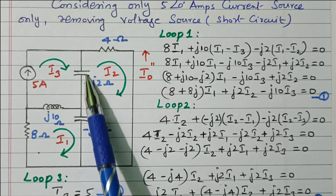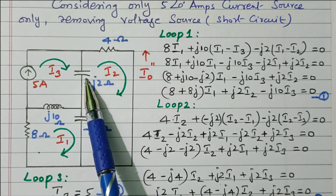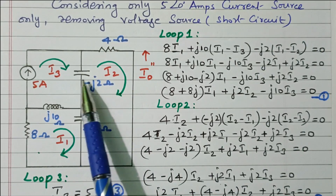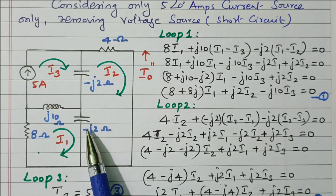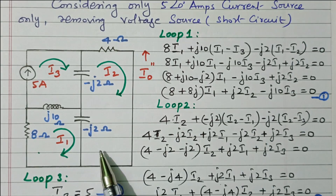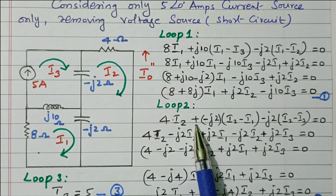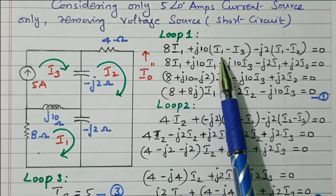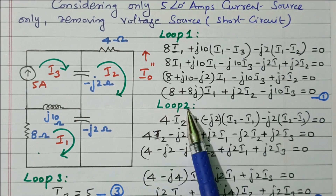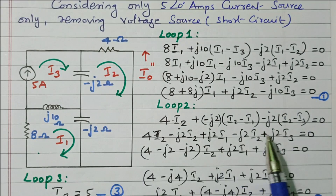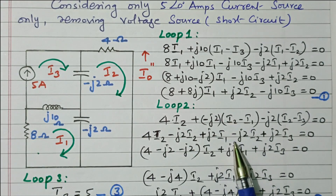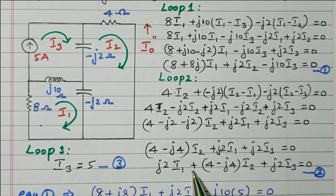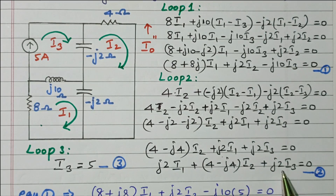Applying KVL to loop 2: the 4 ohm resistor carries only I2; one capacitor is shared between loops 2 and 1 giving (I2 − I1); another capacitor is shared between loops 2 and 3 giving (I2 − I3). After simplification, Equation 2 is: −j2·I1 + (4 − j4)·I2 + j2·I3 = 0.